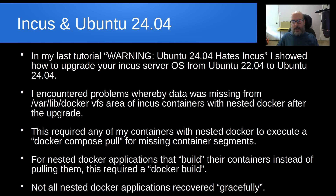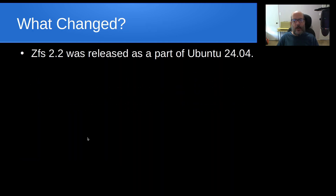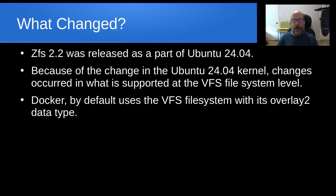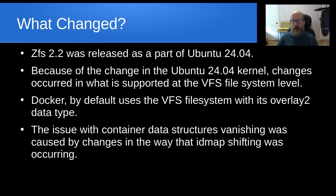Not all nested Docker applications recovered gracefully despite these steps. So what exactly changed? ZFS 2.2 was released as part of Ubuntu 24.04, and because of the change in the Ubuntu 24.04 kernel, changes occurred in what is supported at the VFS file system level. Docker by default uses the VFS file system with its overlay data type, and the issue with container data structures vanishing was caused by changes in the way that ID map shifting was occurring.